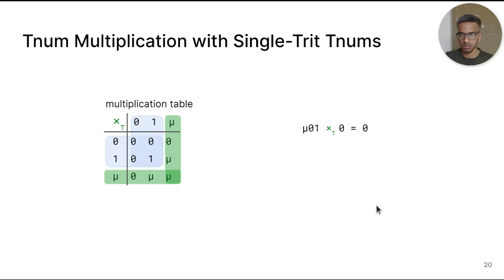It follows from the multiplication table that when we multiply the single digit TNUM 0 with a TNUM of arbitrary length, the result should be 0. Similarly, when we multiply the single digit TNUM 1 with any TNUM, the result should be the same TNUM. Importantly, when we multiply the single TNUM mu with any TNUM, the result should be such that all the 1 trits in the TNUM are changed to mu. So mu 0 1 times mu is mu 0 mu.